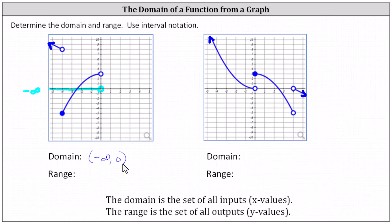To determine the range, we analyze the graph vertically, or along the y-axis. The lowest point on the graph is this point here where y equals negative five. Negative five is in the range. From here, the graph continues upward until the y value of three. Because we only have an open point at y equals three, three is not in the range.